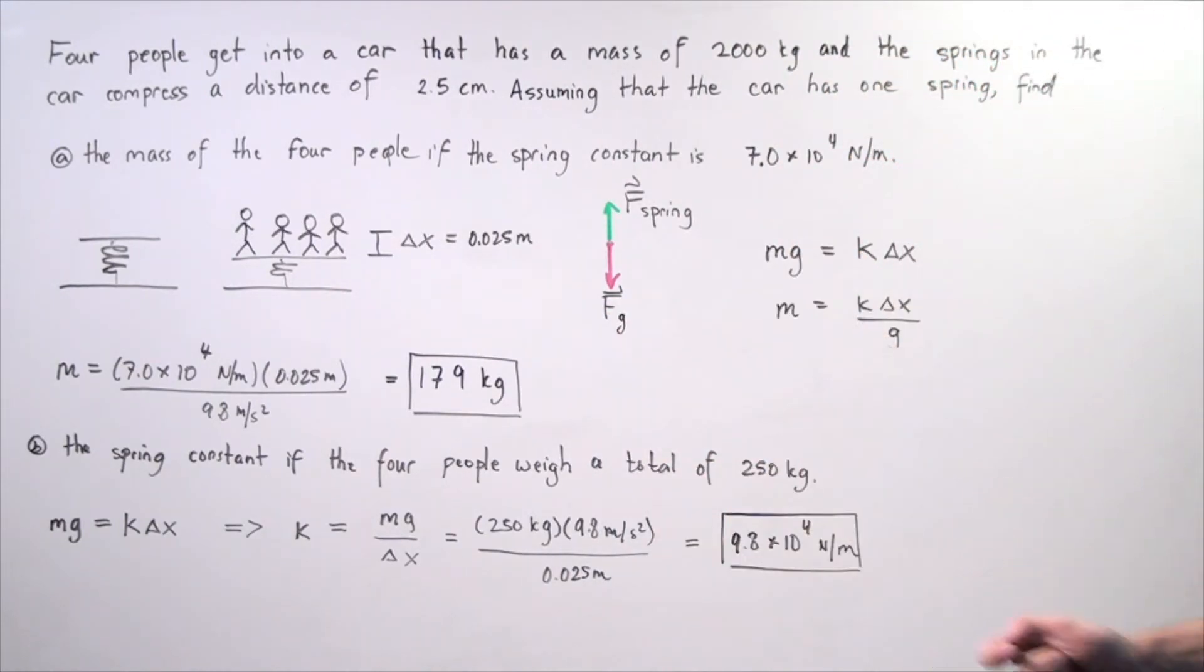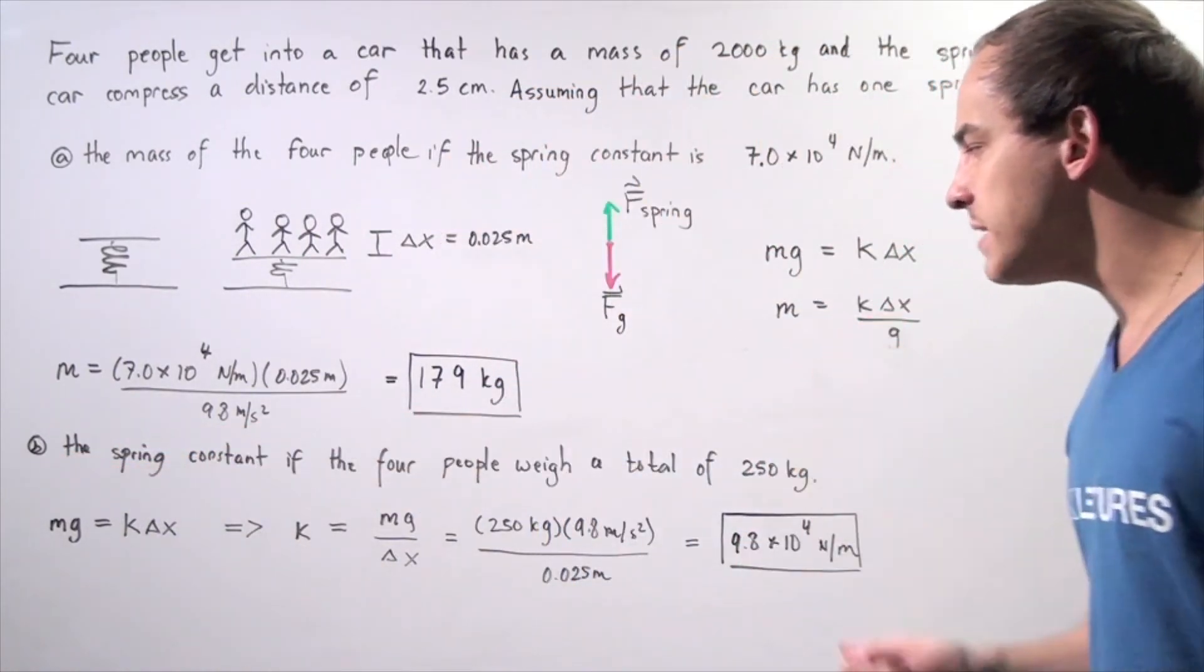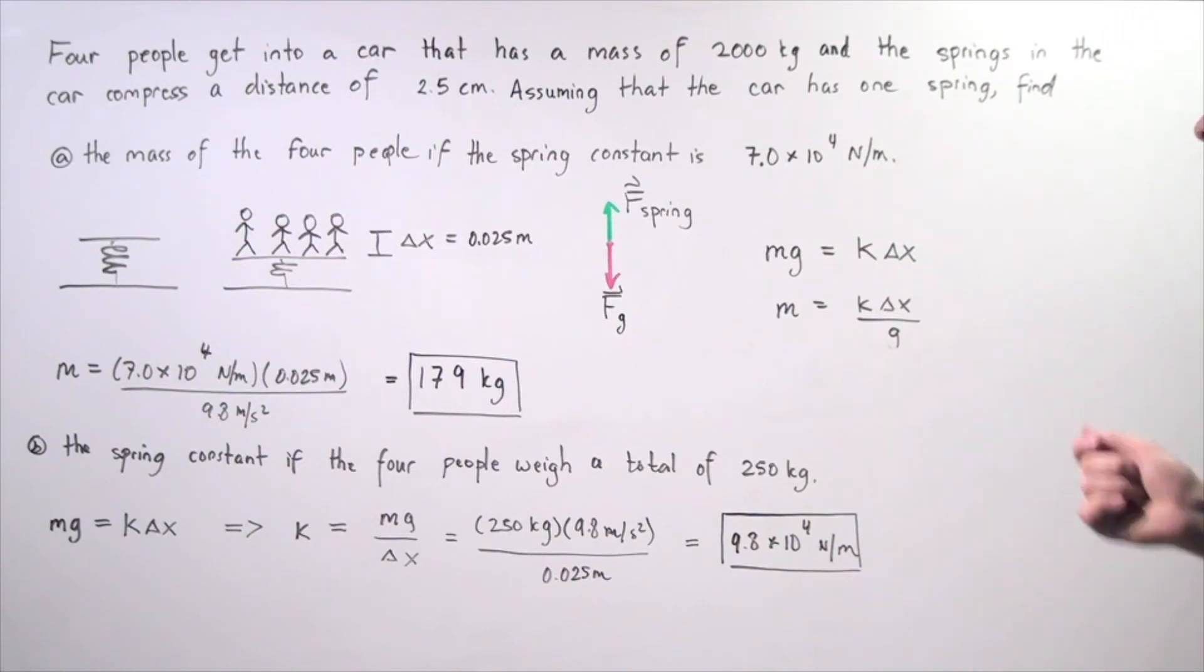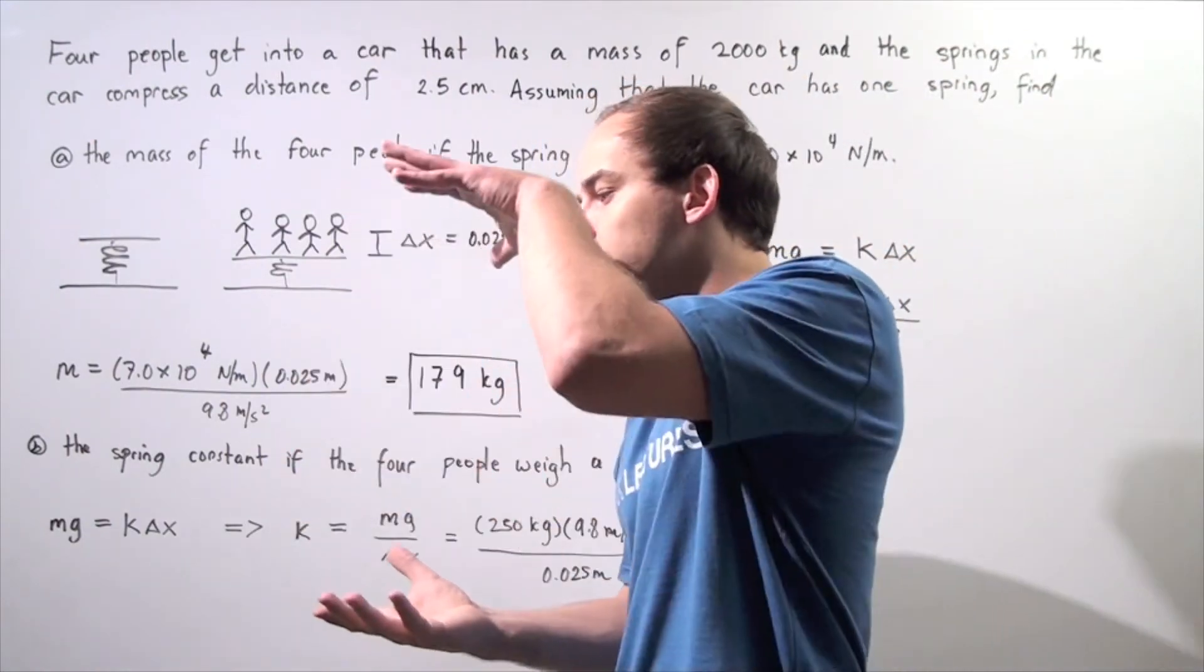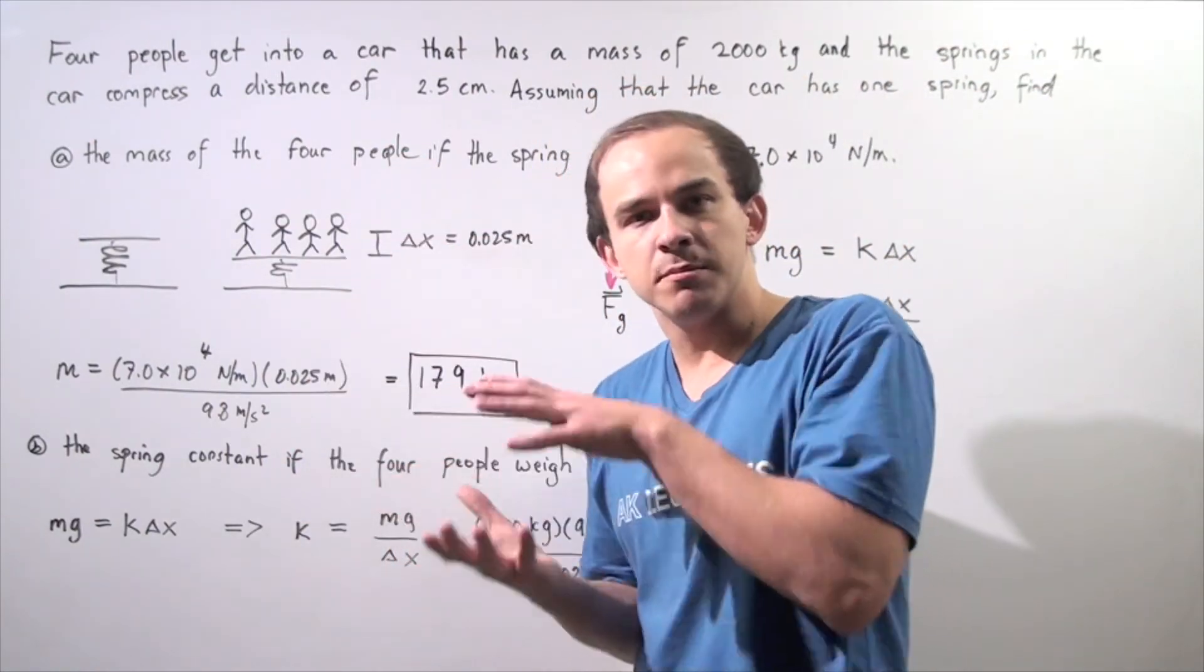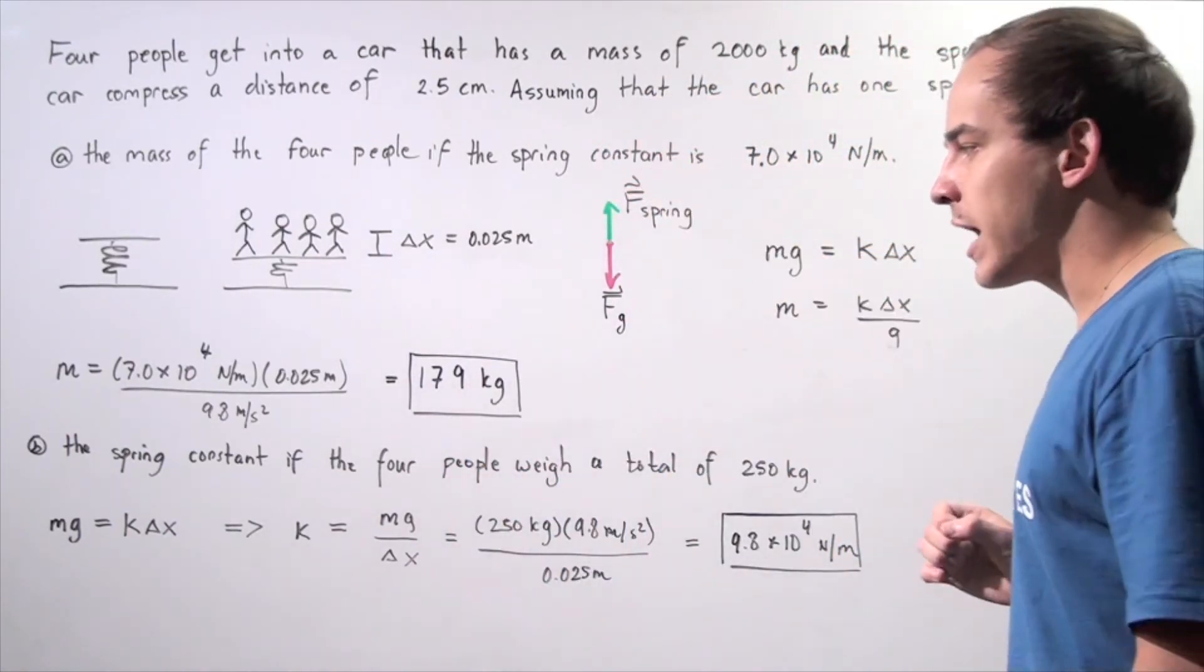What about part B? Assuming that the car has one spring, find the spring constant if the four people weigh a total of 250 kilograms. Once again, the people get into the car, the spring compresses, it comes to a complete stop, so static equilibrium, and that means we use this diagram.